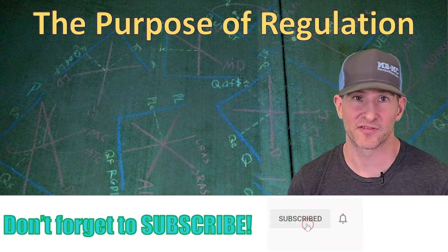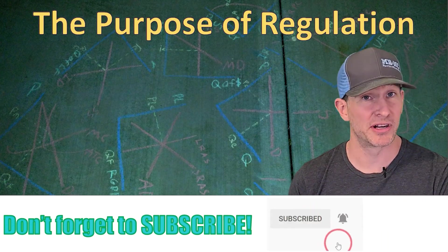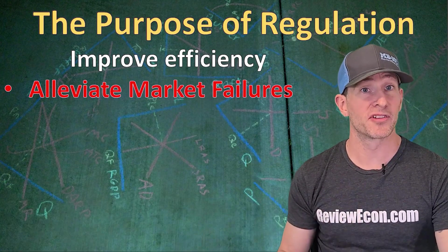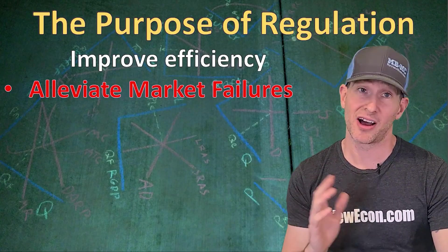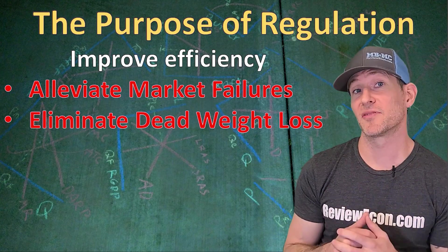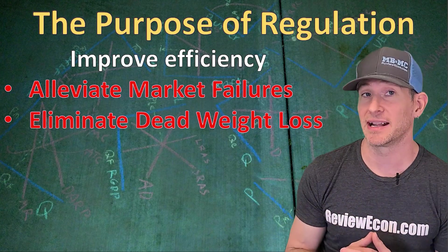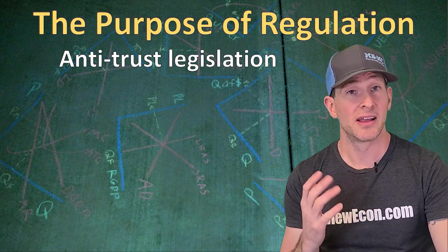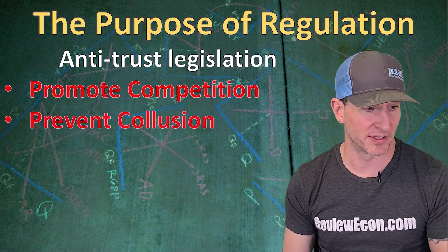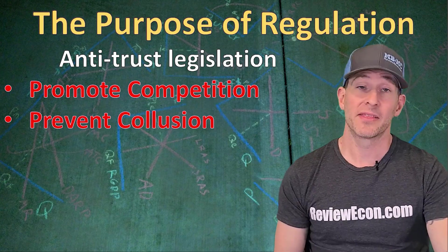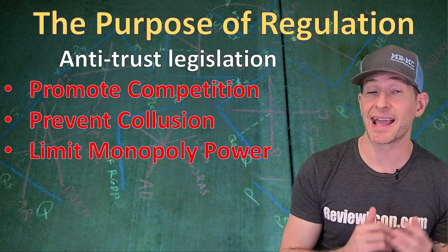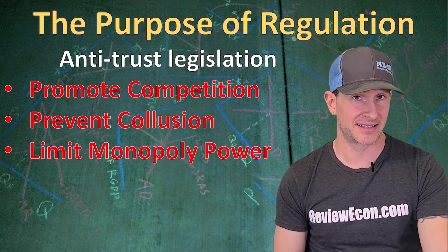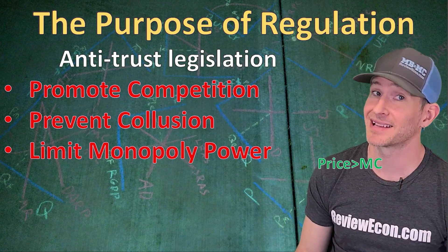First, let's talk about the economic reason for government intervention. Ideally, government intervention is going to improve efficiency — that means it is going to alleviate some of the market failures in this unit. One of those market failures is a natural monopoly, which underproduces, overcharges, and creates deadweight loss. Through properly designed government interventions, we could reduce or even eliminate that deadweight loss. Antitrust legislation is one of those regulations that could help alleviate market failures. We are trying to promote competition, prevent the formation of monopolies, and prevent collusion with oligopolies. That will limit monopoly power, increase the quantity produced, decrease prices charged, and prevent the market failure where price is greater than marginal cost.